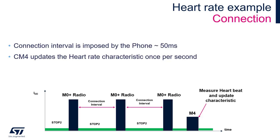Now we will take the phone with the STBLE Sensor application and connect to the Nucleo. The connection interval is imposed by the phone and is typically about 50 milliseconds. The peripheral could negotiate a longer connection interval to save power, but this is not implemented in this example. We will again see the periodic pattern of CM0+ and radio activity, and once per second we should also see CM4 activity which performs the heart rate measurement and updates the BLE characteristic.